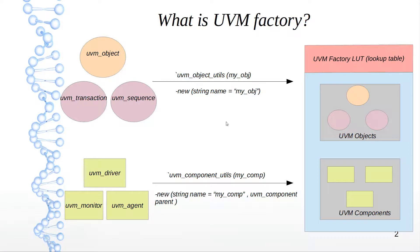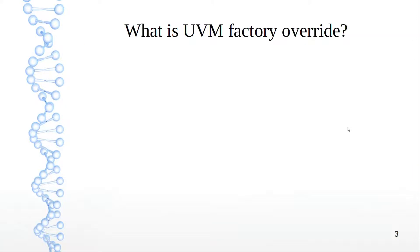So that's how you register your objects, transactions, and sequence items along with the components in the UVM factory. Once you have done that, the next thing to discuss is factory override.